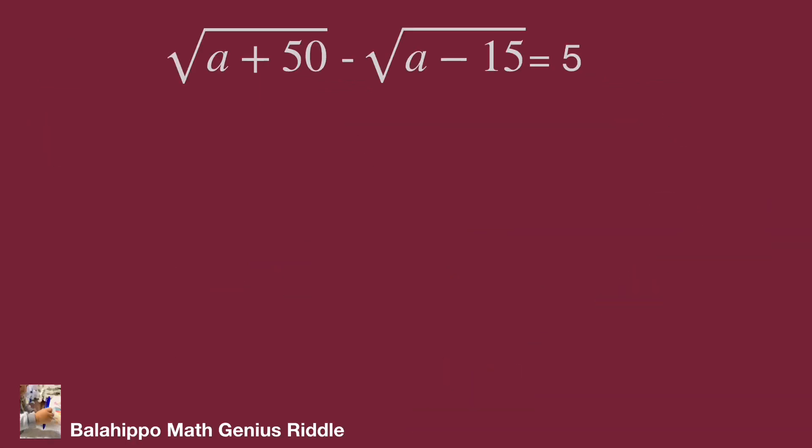The question: square root of a plus 50 minus square root of a minus 15 equals 5. Basic concept is to remove the square root. I am going to square these two items. Let square root of a plus 50 equal to p and square root of a minus 15 equal to q. Substitute these two items by p and q. We get p minus q equals 5.